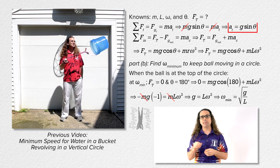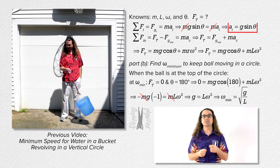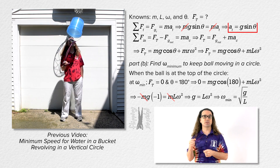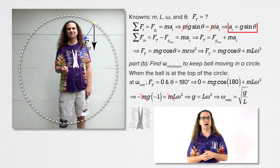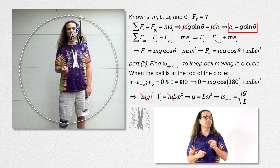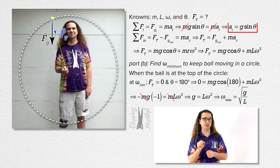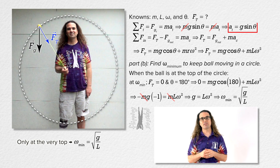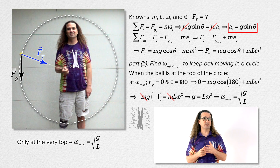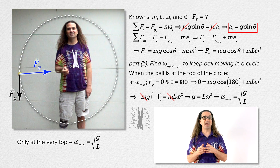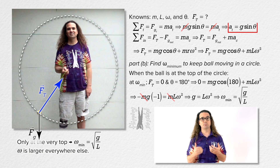I want to make it absolutely clear that, as we showed last time, the angular speed of the ball decreases as it moves up toward the top of the circle and increases as it moves down away from the top. Therefore, this minimum angular speed is only at the singular point at the very top of the path, when the string is completely vertical. Before and after the ball is at the top of the path, the angular speed will be larger than this minimum angular speed.